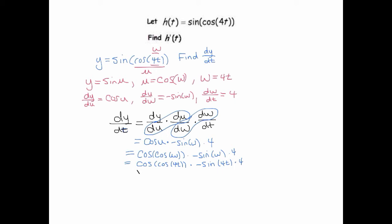So this is the outermost derivative of sine, right? It's just the cosine. And the input to sine is cosine of 4t, so we take that derivative, then we times by the derivative of cosine.